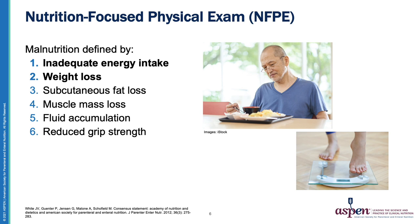Malnutrition is defined as the presence of two or more of the following six characteristics: inadequate energy intake, weight loss, subcutaneous fat loss, muscle mass loss, fluid accumulation, and reduced grip strength.